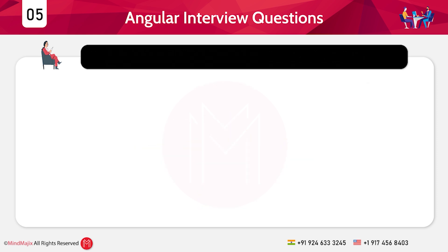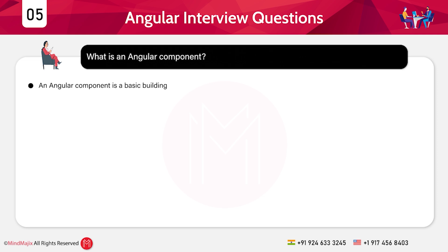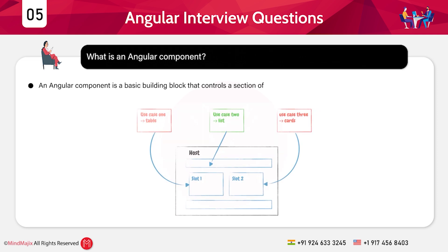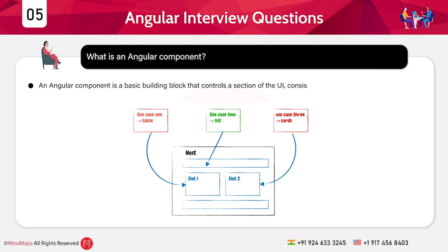The fifth question: What is an Angular component? An Angular component is a basic building block that controls a section of UI, consisting of an HTML template, a CSS file, and a TypeScript class. These were the five theory-based or frequently asked questions. Now let's dive into the scenario-based questions for beginners.